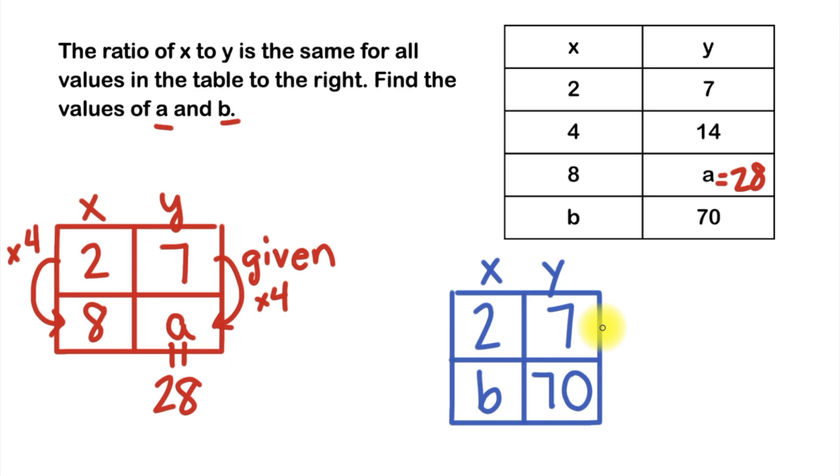So what do you think we'll have to multiply by to go from 7 to 70? If you said multiply by 10, that's absolutely correct. So we'll put times 10 here. And because it's a ratio table, whatever we do to the right side we're going to do to the left. So we'll put 2 times 10, and what's 2 times 10? Well that's 20, so we could say b equals 20.